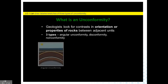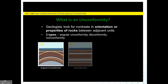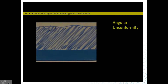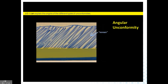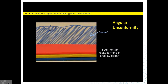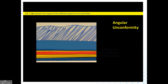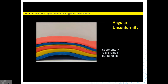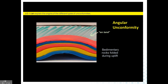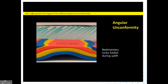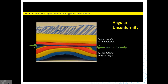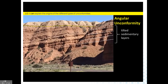Most unconformities are old erosion surfaces recognized because rocks above and below have different orientations or properties. There are three types. For angular unconformities: first imagine horizontal layers of sedimentary rock forming under marine conditions. Then uplift occurs — similar to a convergent plate boundary — and layers may be tilted, faulted, or folded. Once exposed at the surface, upper layers are removed by erosion. When resubmerged, new horizontal layers are deposited on top of the erosion surface.